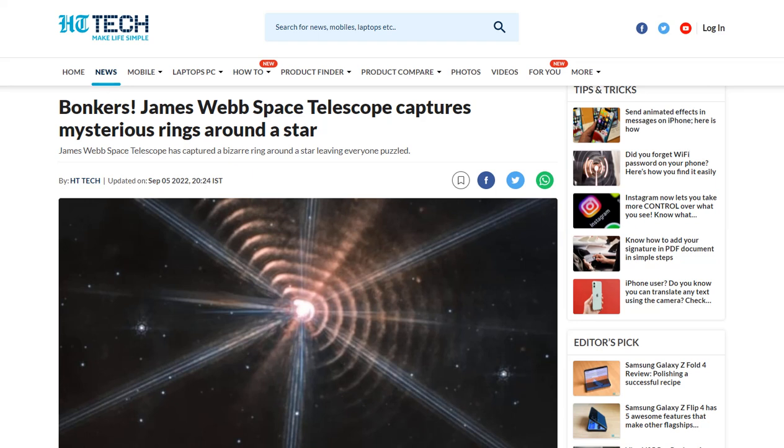Now the James Webb Space Telescope images showing mysterious, oddly shaped rings around a distant star called WR140 leaves astronomers a bit puzzled, with one astronomer calling it bonkers.